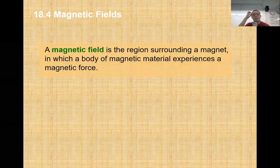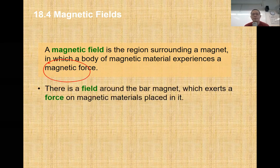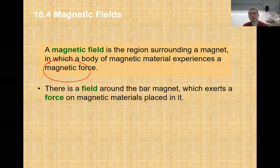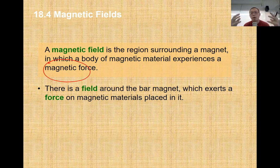Magnetic fields, loosely explained, is the area where the material actually experiences the magnetic force - the attraction and the repulsion that we mentioned in the earlier topics. That field can be represented in various ways. If we look at the drawings of the magnetic fields, a single magnet with north and south will have a certain pattern.